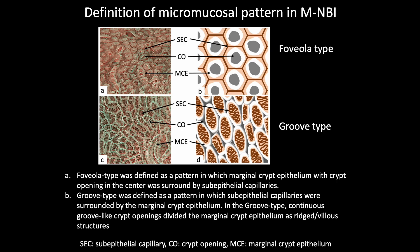Japanese endoscopist Kanzaki examined the micromucosal patterns of gastric body mucosa using magnified narrowband imaging and classified them into foveola type and groove type, finding that the incidence of gastric intestinal metaplasia was higher in the groove type than foveola type mucosa. This slide shows the definition of micromucosal pattern in magnified narrowband imaging. Foveola type was defined as a pattern in which marginal crypt epithelium with crypt opening in the center was surrounded by subepithelial capillaries.